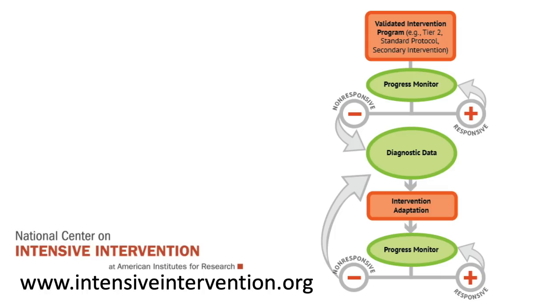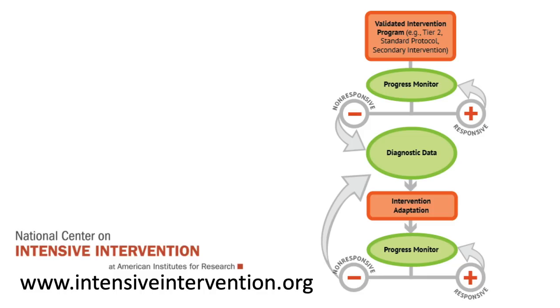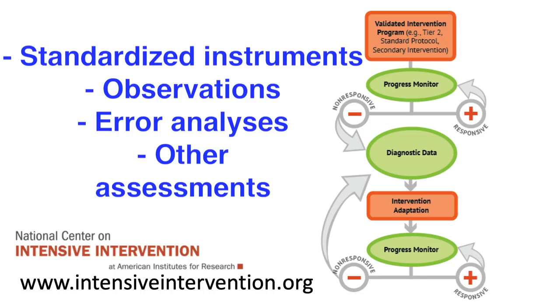When students are not making adequate growth as indicated by CBMs, teachers use additional diagnostic information to try to figure out the root cause of the academic or behavioral challenges. These data may come from standardized instruments, teacher observations, error analyses of progress monitoring data, and regular class assessments. The intervention teams use these data to develop a hypothesis about the student's unique needs and then plan instructional changes accordingly. The team focuses on the area of student struggle most likely to result in performance gains in priority areas.